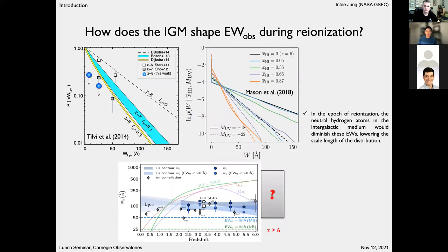How does the e-folding scale change into the epoch of reionization? Neutral hydrogen in the intergalactic medium would diminish Lyman alpha emission strength, lowering the characteristic e-folding scale. As shown in figures from Tilby et al. and Mason et al., reionization models predict that a higher neutral hydrogen fraction would hinder Lyman alpha photons passing through the IGM, reducing the e-folding scale of the distribution. This provides the research question: how does the e-folding scale evolve into the epoch of reionization, particularly at redshift 7.6 from our Lyman alpha observations?